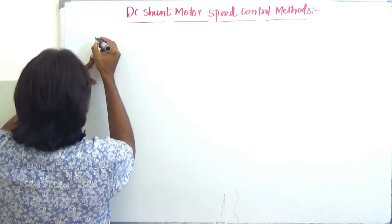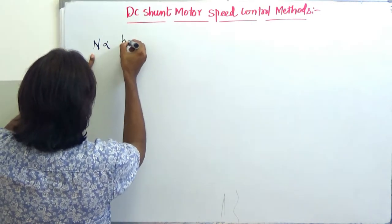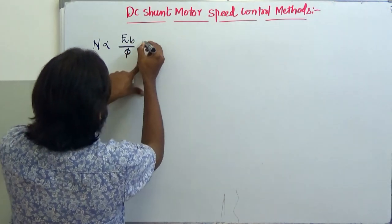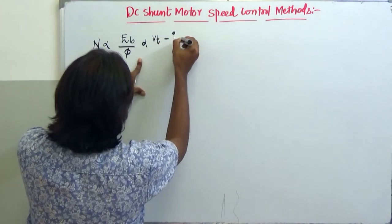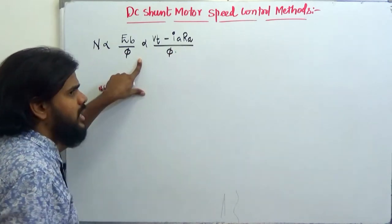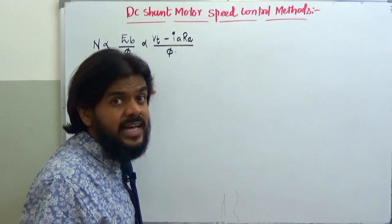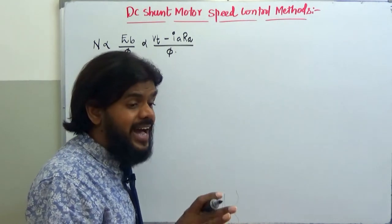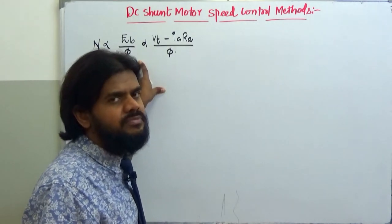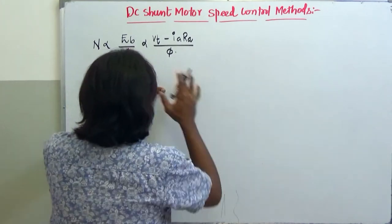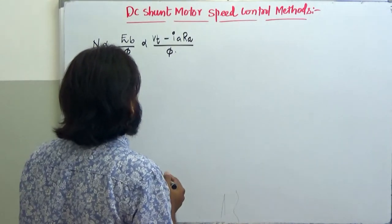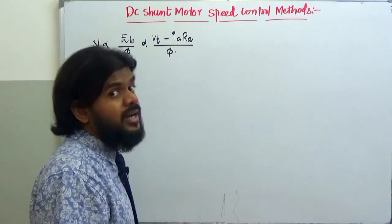The equation of speed of a DC motor, whether it is series or shunt, can be written as N ∝ (Vt − Ia·Re) / φ. Since I am saying it is a shunt motor, the flux will remain constant unless you change it with the effect of some external resistance. This equation of speed will help us know how many methods are possible.